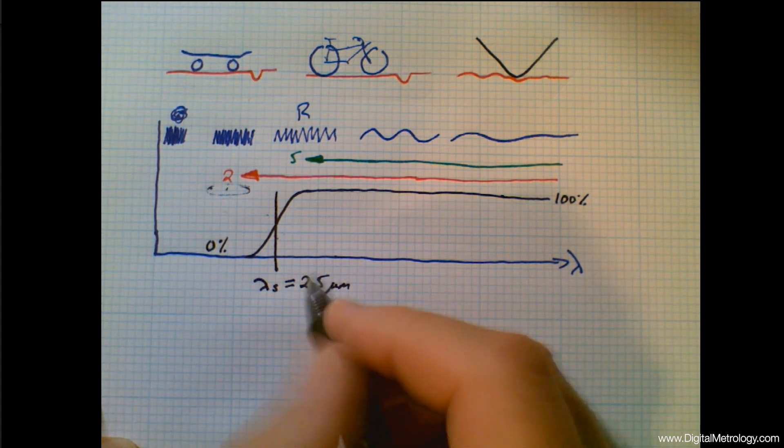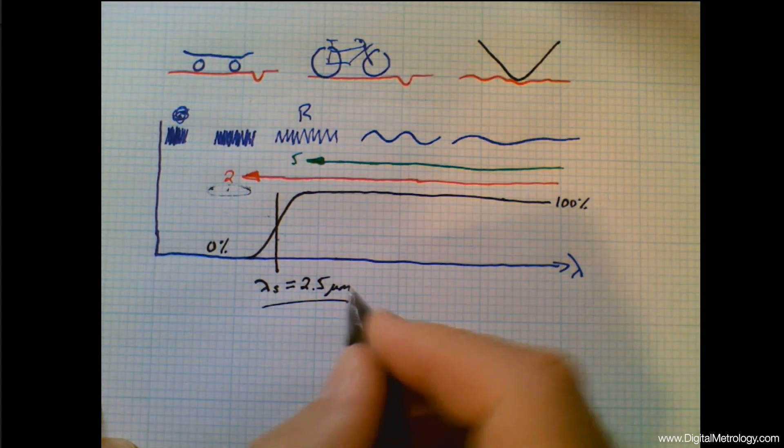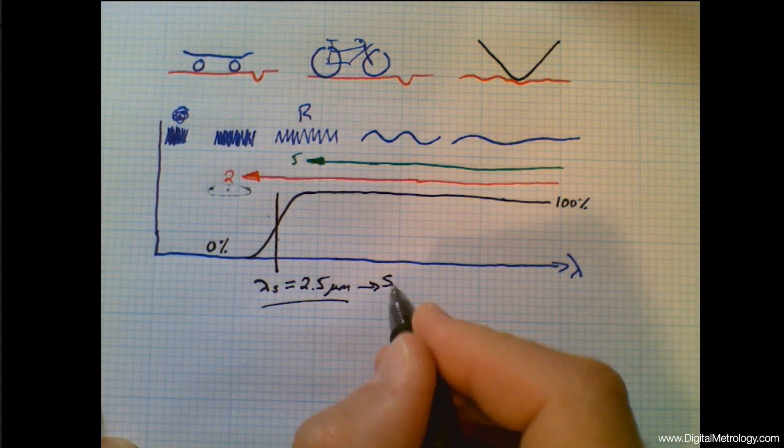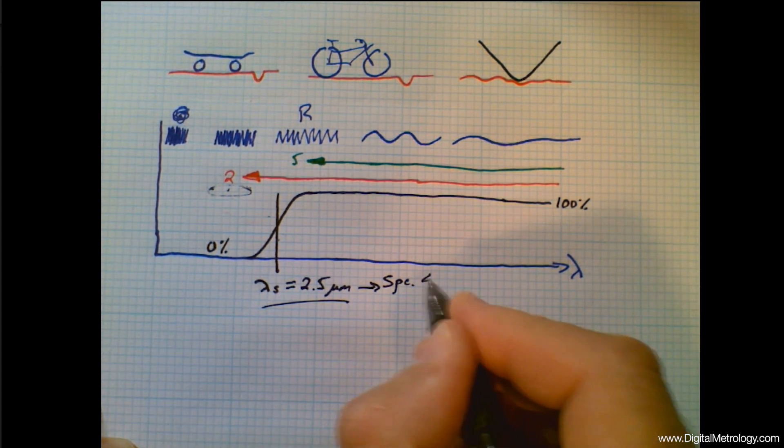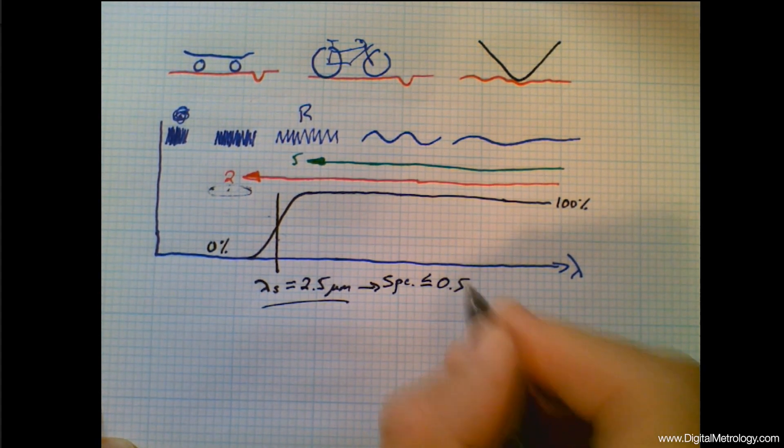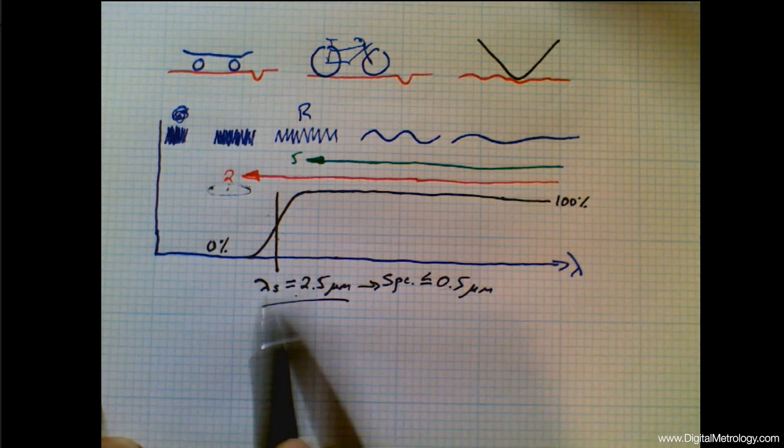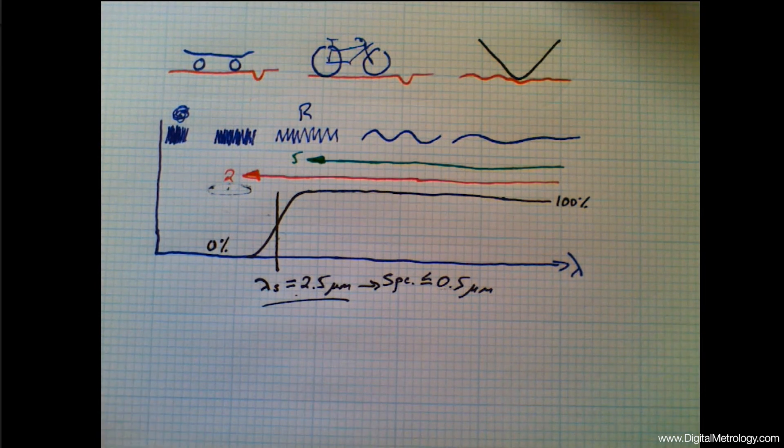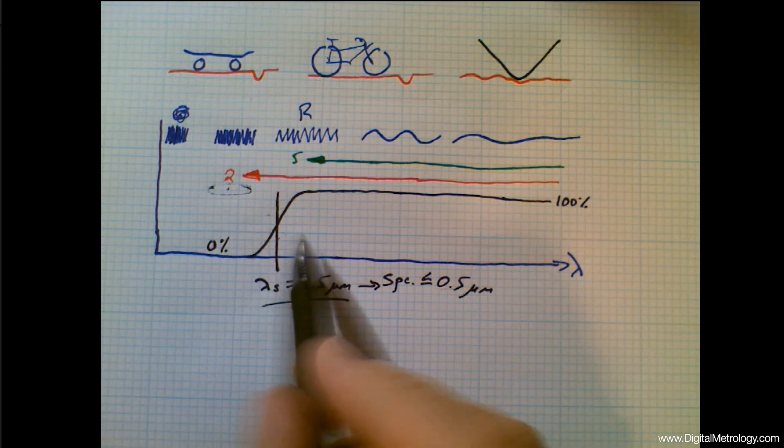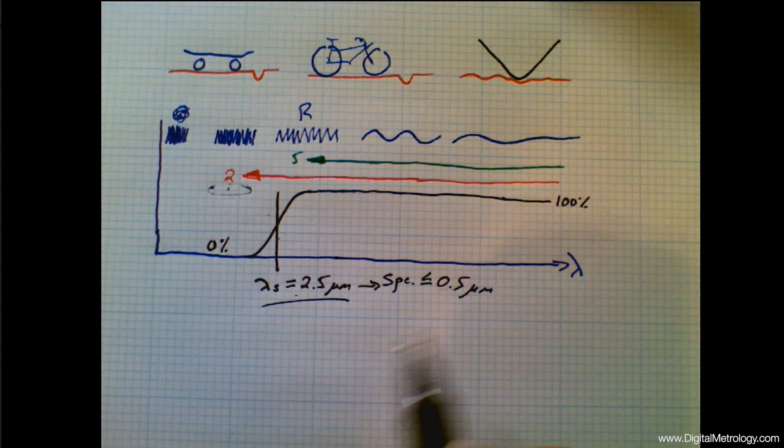Now this not only dictates a 2 micron tip radius, but this also tells us about our data point spacing. Our spacing needs to be less than or equal to half a micrometer. We like to see five data points at the last or smallest wavelength we care about. So this tells us how to buy a roughness gauge or how to set up a roughness gauge so we can get agreement between systems.